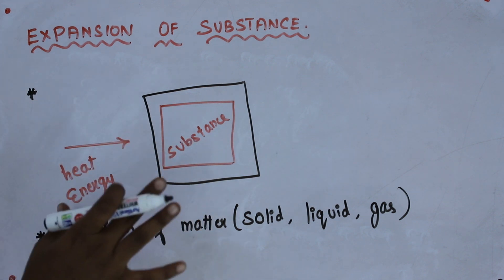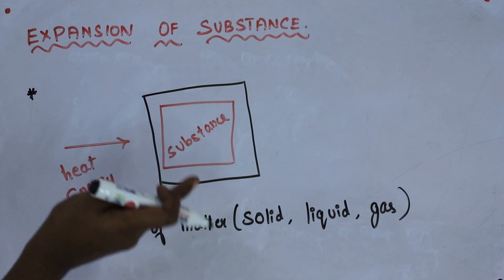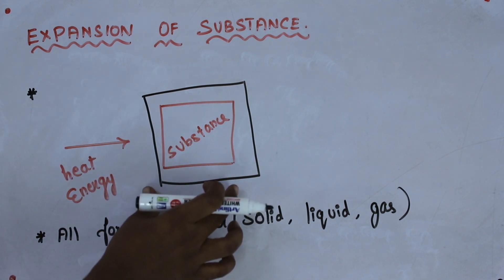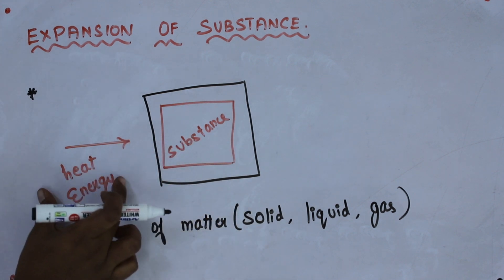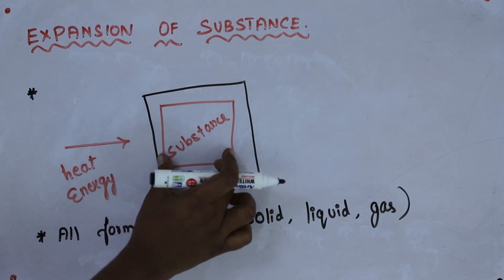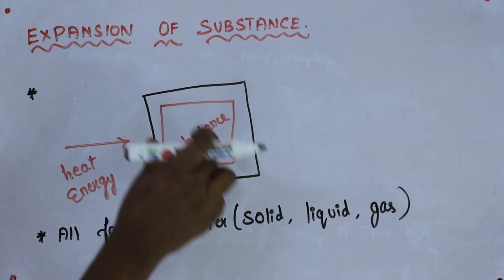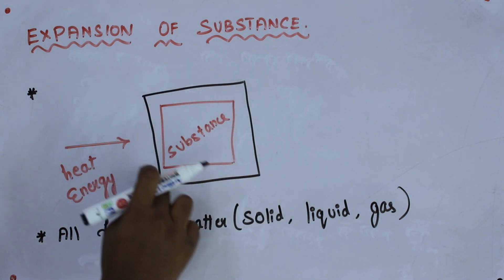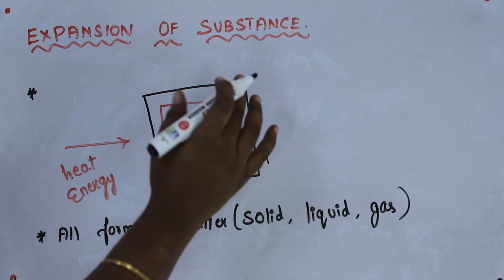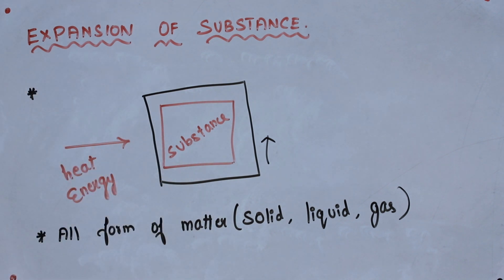This expansion of the substance because of the heat, because of the rise in temperature, is said to be thermal expansion. When heat energy is supplied to the body, there will be an increase in the dimension. This change in dimension due to the rise in temperature is known as thermal expansion.